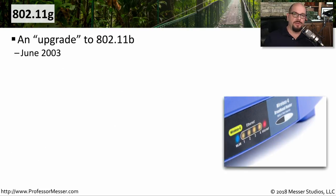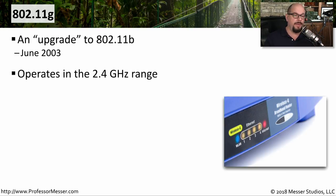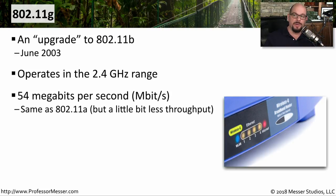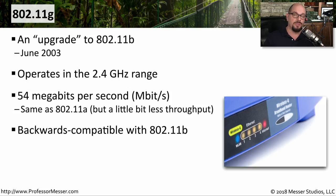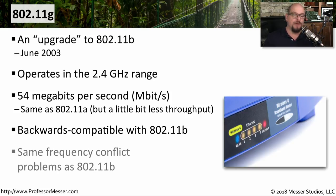802.11g was introduced in June 2003, and it was very similar to 802.11b — considered an upgrade to 802.11b. It operates in the same 2.4 gigahertz range, but the overall throughput was increased to 54 megabits per second, similar to 802.11a. This 802.11g standard was backwards compatible with 802.11b, so an 802.11g access point could easily accommodate 802.11b clients. But you have the same problem with frequency conflict, because you're still communicating in the 2.4 gigahertz frequency range.